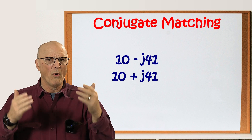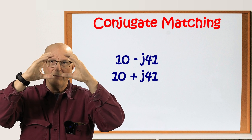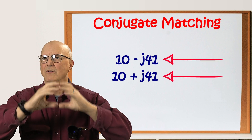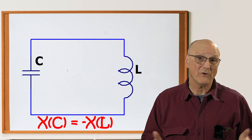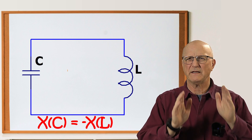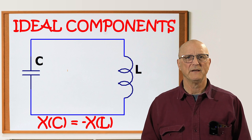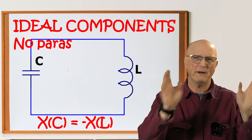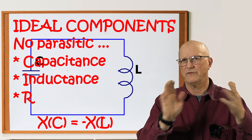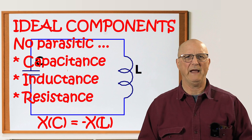So what do we get when we put a capacitor and an inductor in parallel where the magnitude of the reactance is equal? Well, we get a parallel resonance circuit. Let's think about what this means at a very basic level with ideal components just for a moment. With ideal components, there are no parasitic values of capacitance, inductance, or resistance associated with them — they are just pure inductors and pure capacitors.